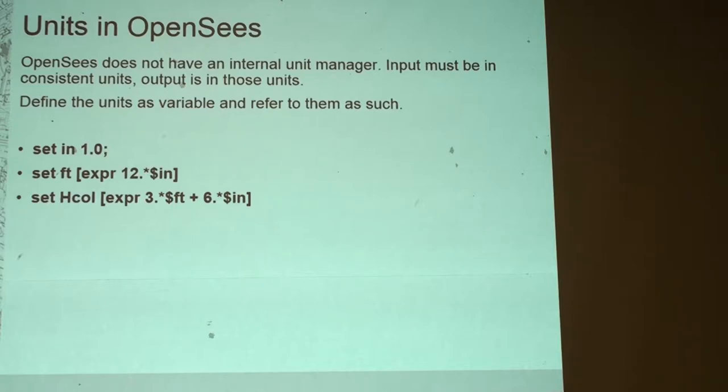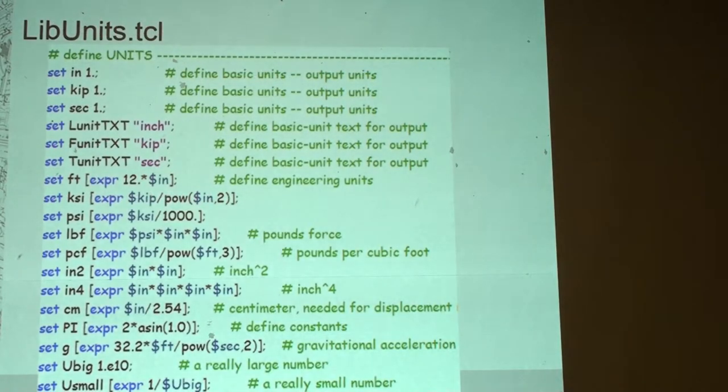So what I've done, and you'll see this in what they now call the advanced examples manual, I've built a library of units. So my basic units, and I like to define them at the very beginning so that I can always go back. And this is a little file that I use and I just take it with me with all of my examples or all of my problems. So inches, kips and seconds are my basic units. The text that I define assigned to those, I use it in some other places. Feet, KSI. You can even define things in centimeters. I like to define pi and I like to define g.